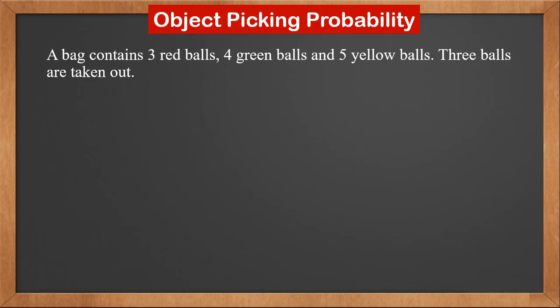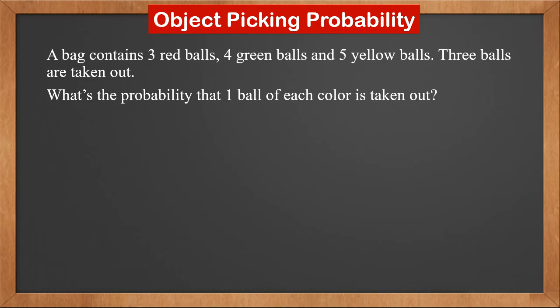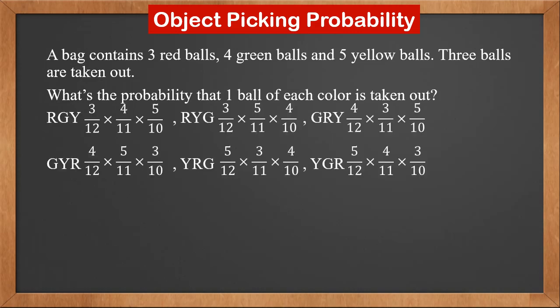A bag contains three red balls, four green balls, and five yellow balls. Three balls are taken out. What's the probability that one ball of each color is taken out? There are six different permutations. For red-green-yellow, the probability is 3/12 × 4/11 × 5/10. For red-yellow-green, it is 3/12 × 5/11 × 4/10, and so on. We must consider all permutations. Notice that all denominators are 12 × 11 × 10 and all numerators are 3 × 4 × 5. Therefore, the answer is (5/12 × 4/11 × 3/10) × 3!, which equals three over eleven.